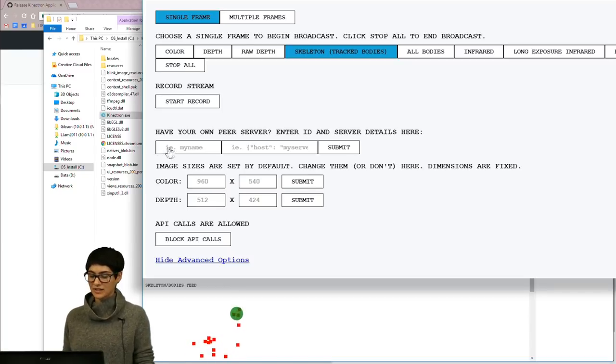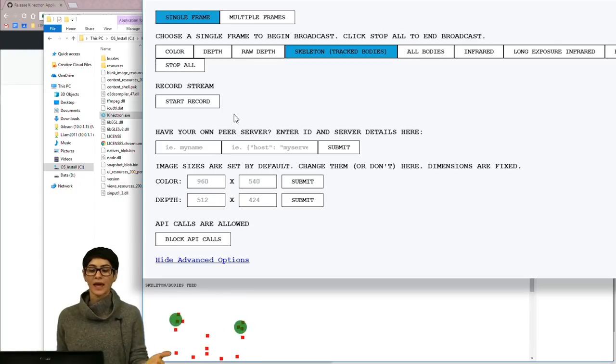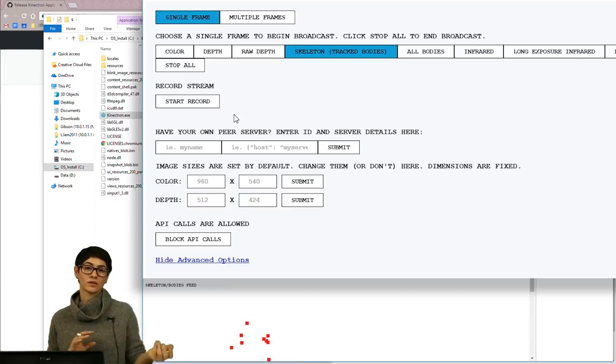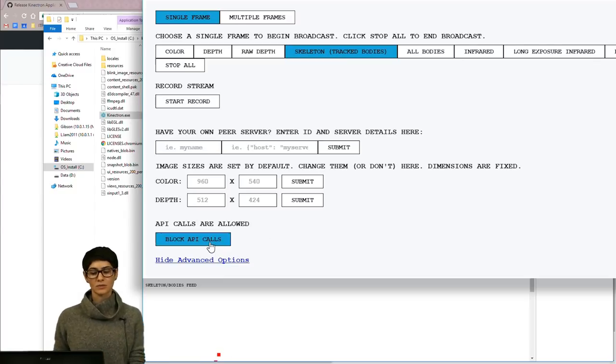So here under advanced options, there's a field here to be able to enter in your own peer server. So Kinectron works over peer.js. And by default, it sets up a connection on your local network, which is what we'll work on today. But if you wanted to go out onto the World Wide Web and be able to work across continents like we were looking at on the whiteboard, you would need to actually set up a peer server, which is pretty straightforward. But I'm not going to be able to go over it today because I just don't have enough time. But that's where you would enter that information in. Then you can also change the sizes of your images in case you want them bigger or smaller or need to make them smaller for your bandwidth or whatever.